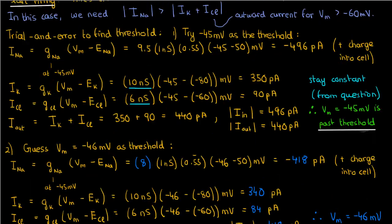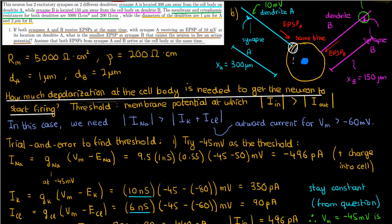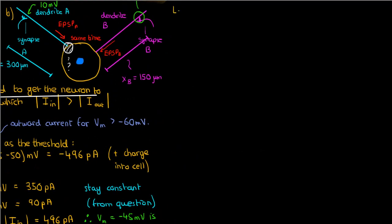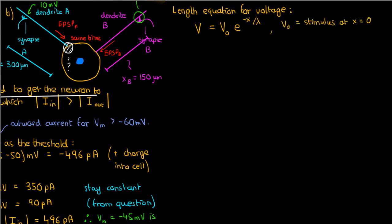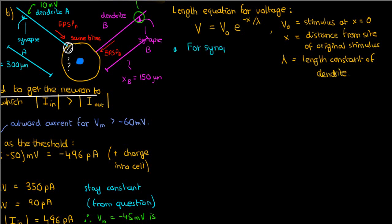Now let's find how much synapse A contributes to depolarization of the cell body. We use the voltage length equation, which states that a signal propagating along a neuron decreases in strength with distance due to energy loss. V₀ is the stimulus at x equals zero, x is the distance from the stimulus site, and lambda is the length constant of that dendrite. For synapse A the initial stimulus is 10 mV and the distance is 300 microns, but we need to find the length constant of dendrite A.